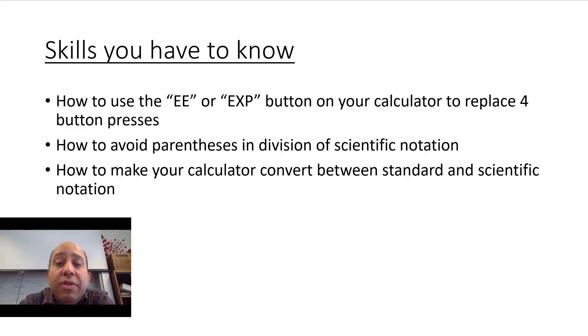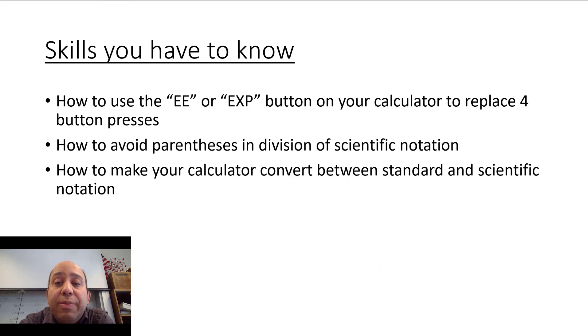So the answer to the second question is 5.39 times 10 to the negative 5 power. So now that you've done those two examples and you've gotten the correct answers, you want to make sure that you have these skills. They are three things.